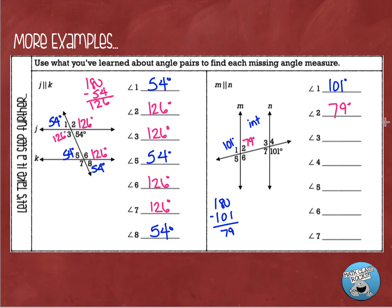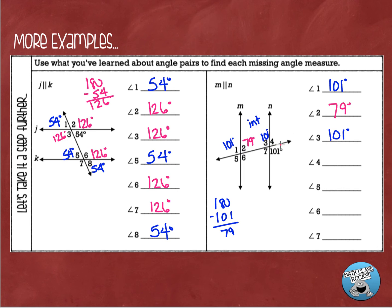Angle 3 is 101 degrees for two reasons: it's corresponding with angle 1, so if I slid line M on top of line N they'd be right on top of each other; and angle 2 and angle 3 are same side interior, so they must equal 180 — 79 plus 101 is 180. Angle 4 is corresponding with angle 2, making it 79 degrees. Angle 5 is vertical with angle 2 — my favorite — so it's also 79 degrees.